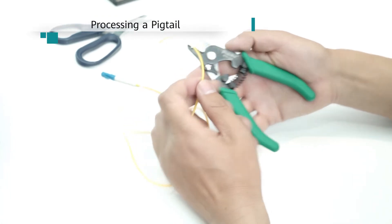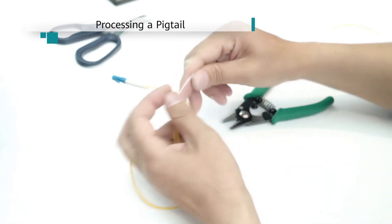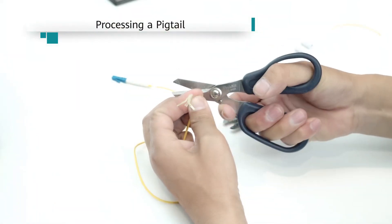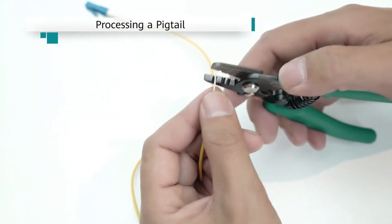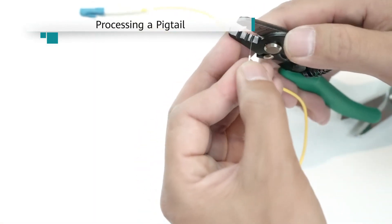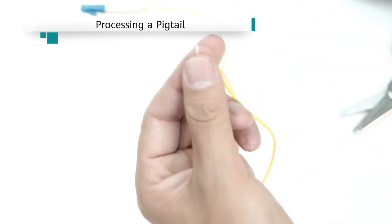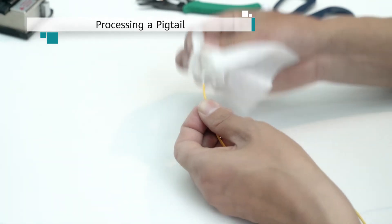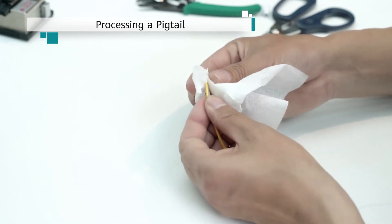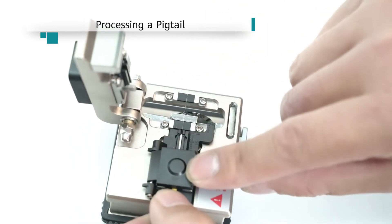Process the pigtail. Use Miller pliers to strip the jacket and coating of the pigtail. Then, clean the pigtail using pure alcohol. Use a fiber cleaver to cut the pigtail.